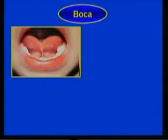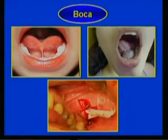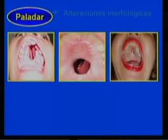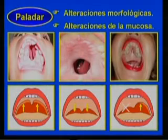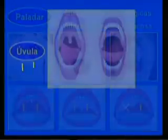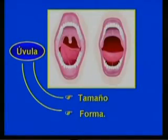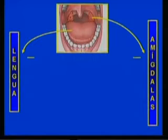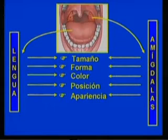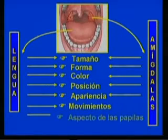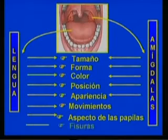En el piso de la boca, apreciarán si existe frenillo, ránulas y flemones. En el paladar, buscarán alteraciones morfológicas y de la mucosa. En el velo, interesa especialmente su movilidad; también tendrán en cuenta el tamaño y forma de la úvula. A nivel de la lengua y las amígdalas, se precisarán sus características como el tamaño, forma, color, posición y apariencia. También en la lengua observarás sus movimientos, el aspecto de las papilas y la presencia de fisuras. Aprenderán a diferenciar las afecciones más frecuentes en ellas.